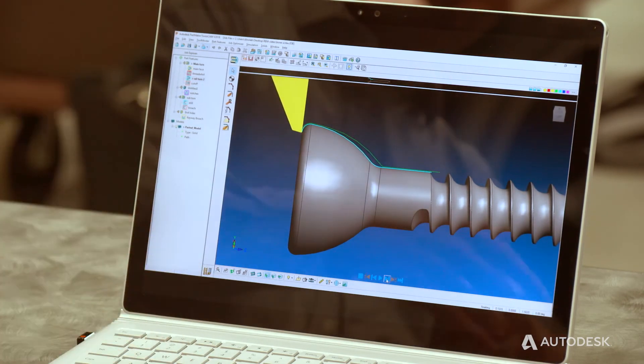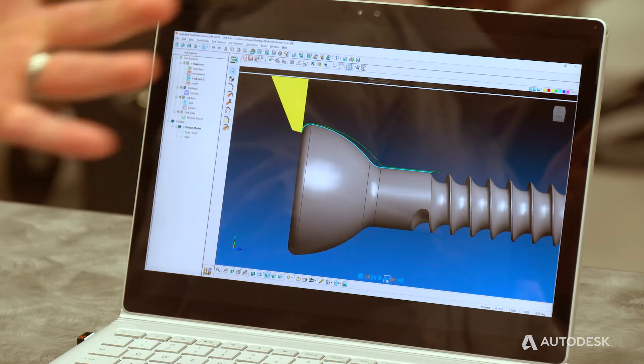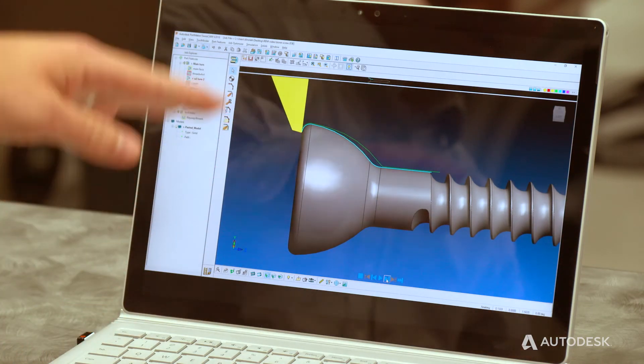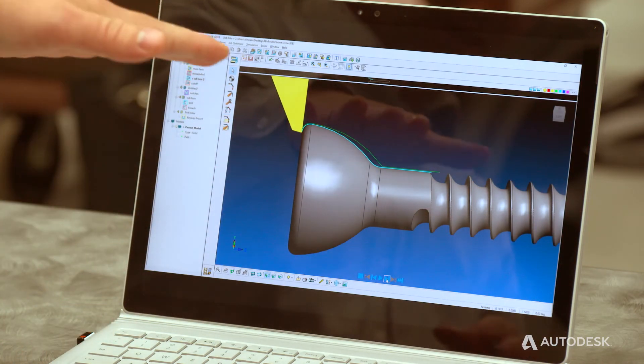So all of the trigonometry that you would normally have to do if you were programming this manually is taken care of by the software, making programming these wiper insert back turning type tools a real breeze.